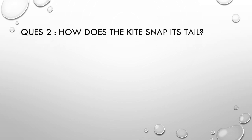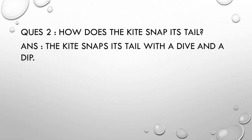Question 2: How does the kite snap its tail? Answer: The kite snaps its tail with a dive and a dip. When these upward and downward movements are made in the sky, the kite snaps its tail — the string is moved when dive and dip movements are made.